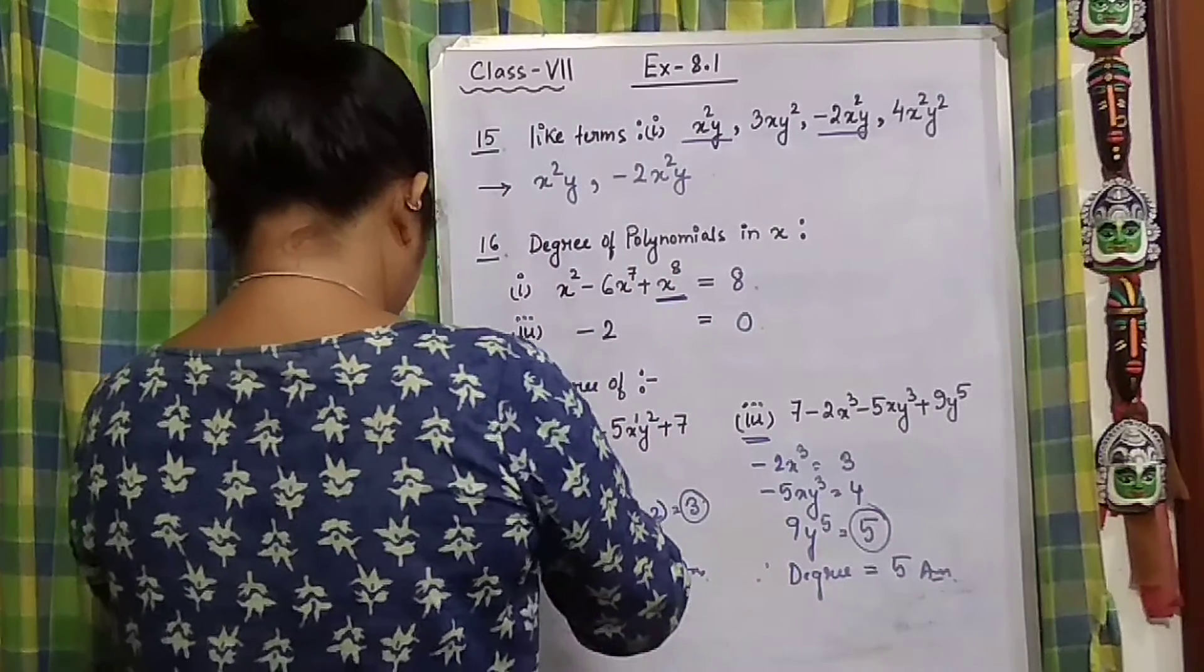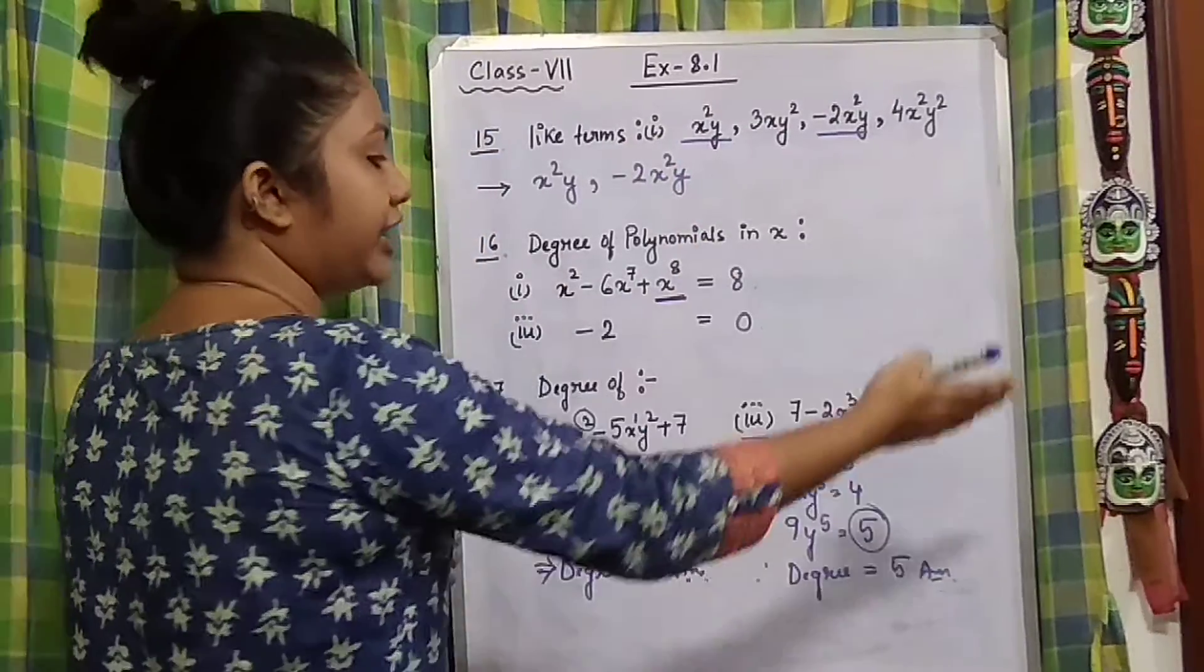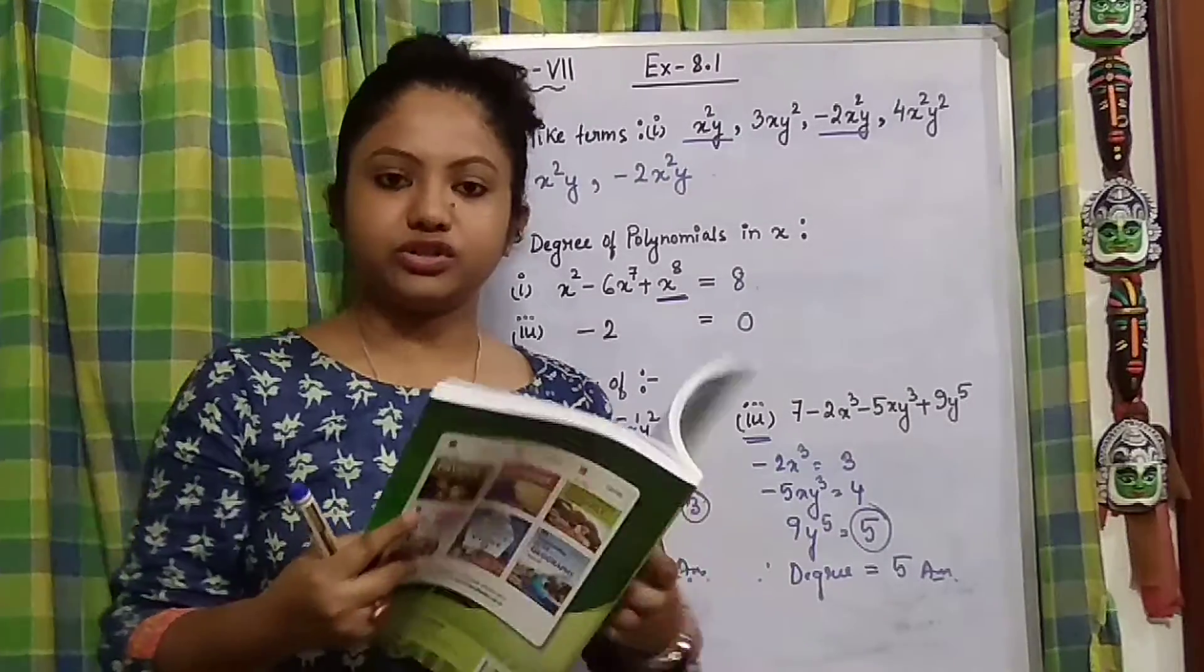So this is how we find the degree of this kind of polynomial with different kinds of variables. That's it for today.